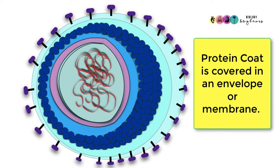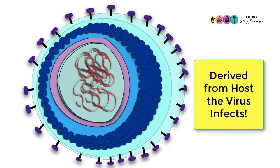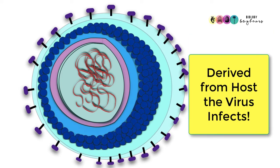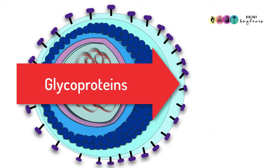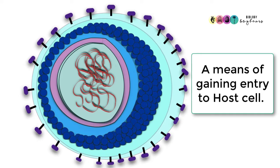This membrane is derived from the host cell that this particular virus would infect. Basically, as it leaves the host cell, it gets enveloped in this membrane, and the membrane gets peppered with particular types of proteins and glycoproteins—all of this to facilitate the virus gaining entry into the host. It's really remarkable.